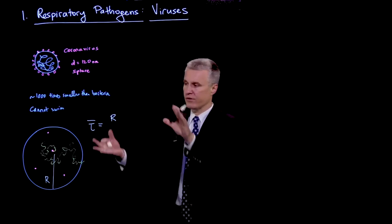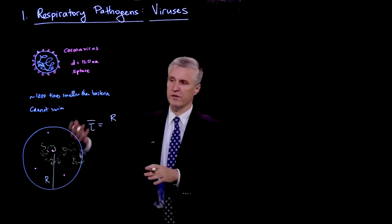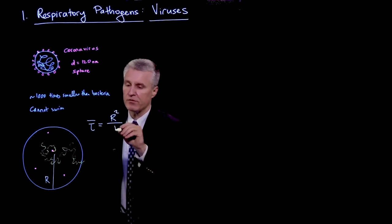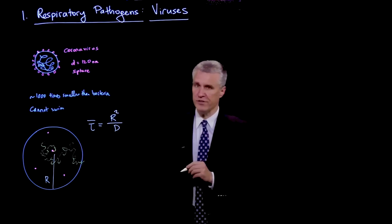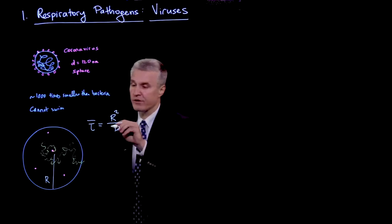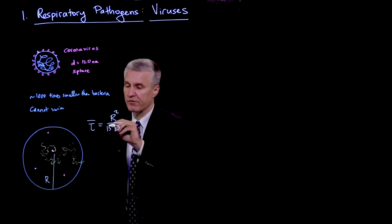the average time for a randomly distributed and selected virion anywhere in this droplet, the time for it to escape, is of order r squared over d, where d is the diffusivity. And if you do a precise calculation for a sphere, then there's a factor of 15 here.